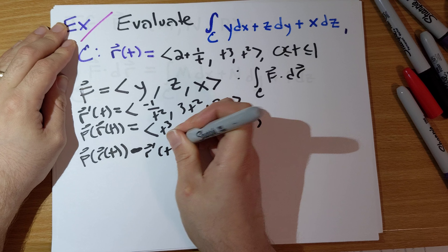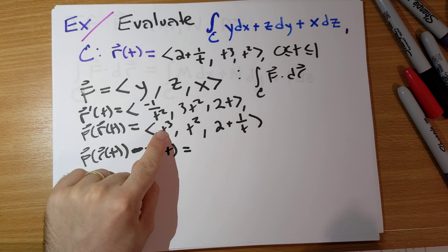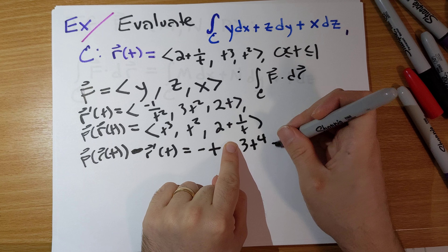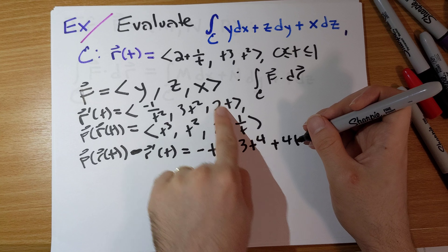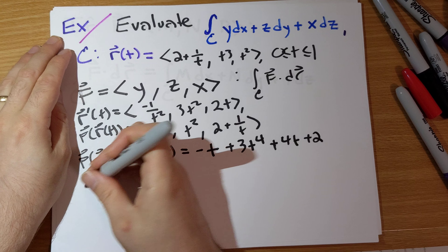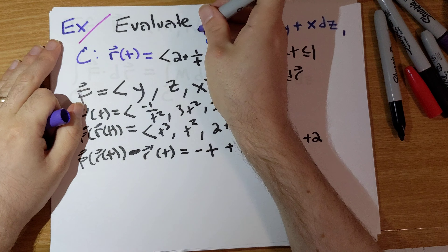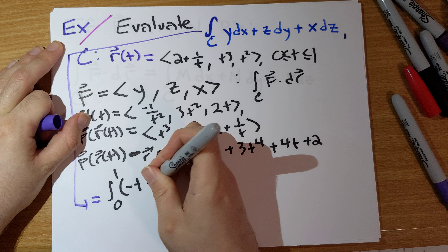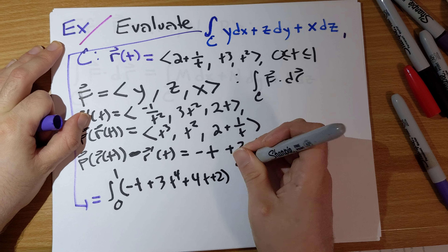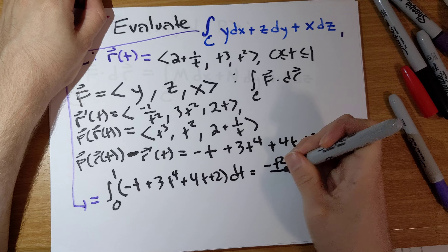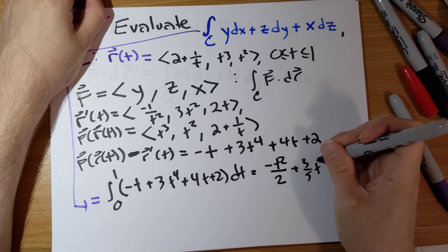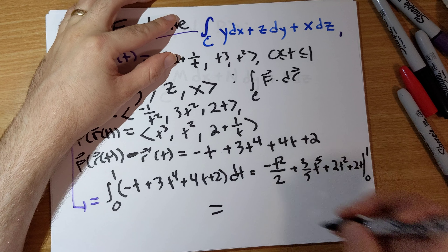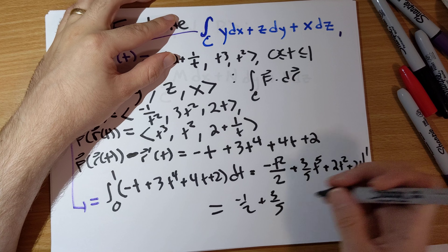f(r(t)) would be: replace y with t cubed, replace z with t squared, and replace x with negative 2 plus 1/t. So f(r(t)) dot r'(t) equals: this times this is negative t, plus 3t to the fourth, plus 4t. That should give us 2. So our answer is the integral from 0 to 1 of negative t plus 3t⁴ plus 4t plus 2 dt, which evaluates to negative t²/2 plus 3/5 t⁵ plus 2t² plus 2t, giving negative 1/2 plus 3/5 plus 4.